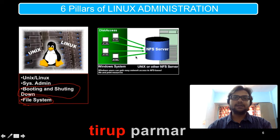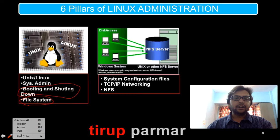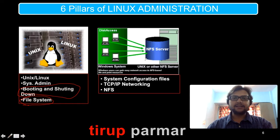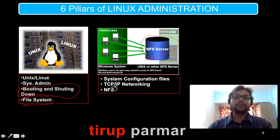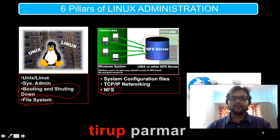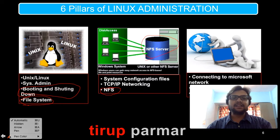The second unit covers servers that help us connect servers or database servers with different clients. Here we'll discuss system configuration files, TCP/IP networking, and NFS — Network File System — and how to work with it. The third unit covers connecting Windows operating systems with Linux operating systems and related topics.